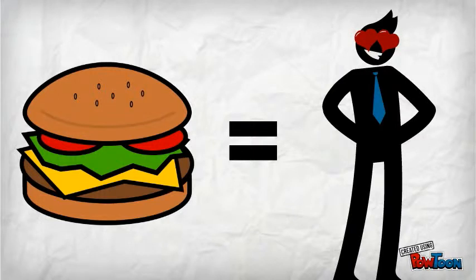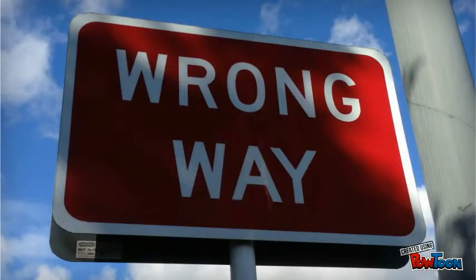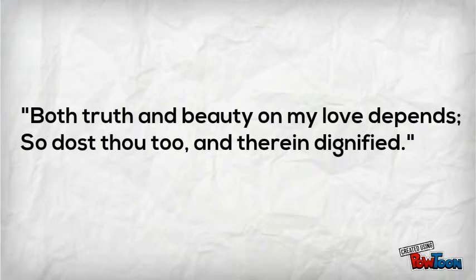The poet starts off the sonnet by scolding his muse for neglecting the truth—the truth being that the poet's love is so beautiful. In these two lines, the poet claims that the muse would be dignified if she would not be led astray by things which claim beauty but aren't truly beautiful. 'Both truth and beauty on my love depends. So dost thou too, and they are indignified.'